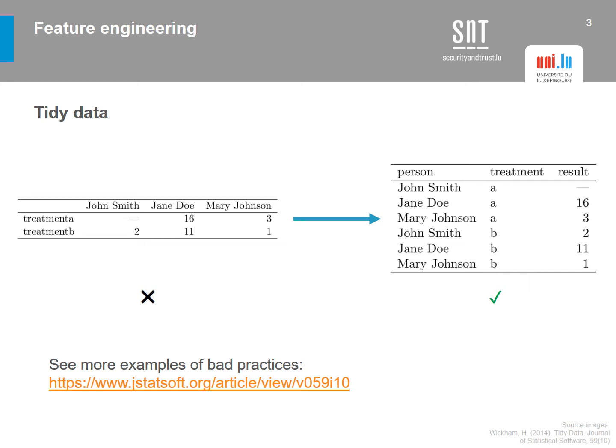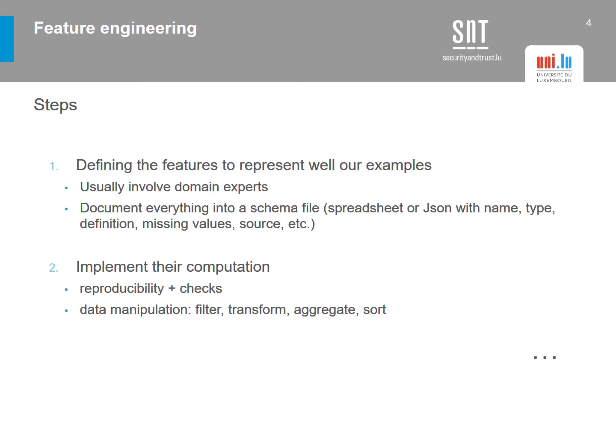Now let's understand the different steps we need to follow in feature engineering. In total, there are six steps. The first step is to define the features that well represent our examples. Usually, we have to involve domain experts. For instance, in spam filtering, we may want advice from experts in spam filtering to know what they consider to be the characteristics of spam. Working with domain experts is very useful, especially in specific domains, so they can tell us what feature variables to compute to help the machine learning model learn what we want.